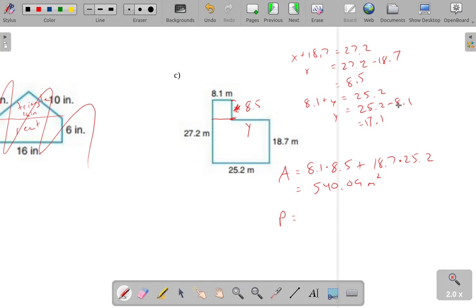And now I actually have enough information to find the total perimeter. It'll just be the sum of all these side lengths. So, 27.2 plus 25.2, I'm doing this one plus this one, and just working my way around, plus 18.7 plus 17.1 plus 8.5 plus 8.1.